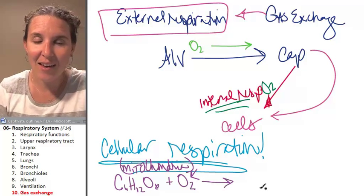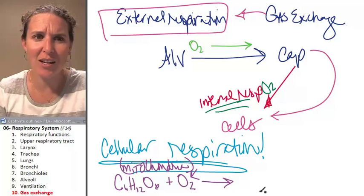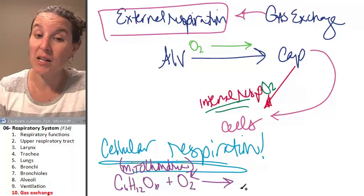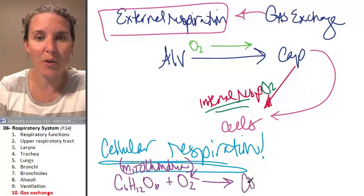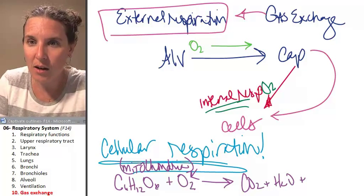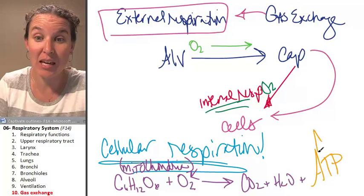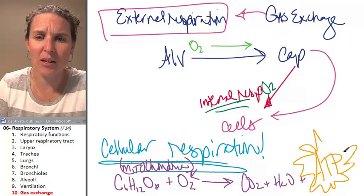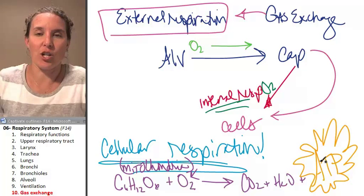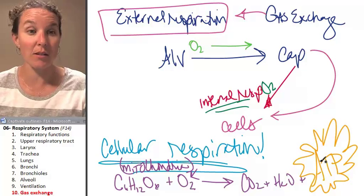And then magic happens. Magic that we actually understand, which is so cool, happens inside the mitochondria and we end up with carbon dioxide and water. And what else? ATP. What is ATP? Dudes of all dudes. It's energy. That's basically money in your cells to do work.